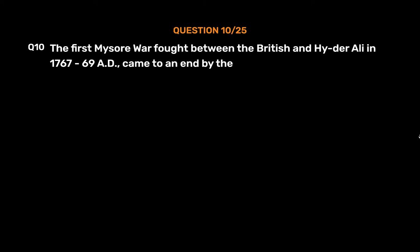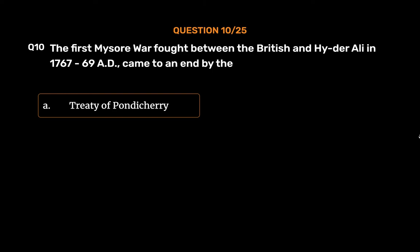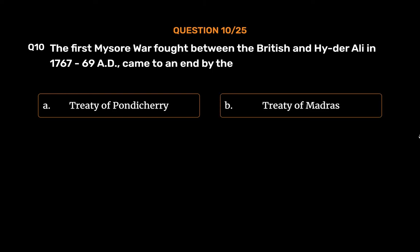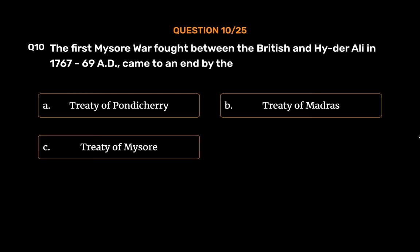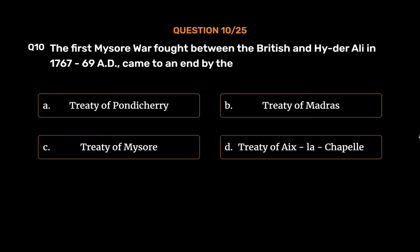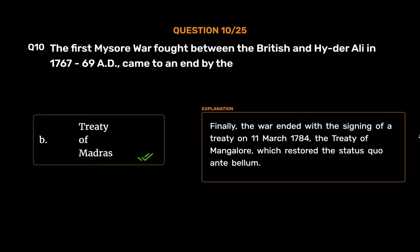Question No. 10: The first Mysore War fought between the British and Haidar Ali in 1767–69 AD came to an end by the — Option A: Treaty of Pondicherry, Option B: Treaty of Madras, Option C: Treaty of Mysore, Option D: Treaty of Aix-la-Chapelle. The correct answer is Option B, Treaty of Madras. Finally, the war ended with the signing of the Treaty of Mangalore on 11 March 1784, which restored the status quo antebellum.